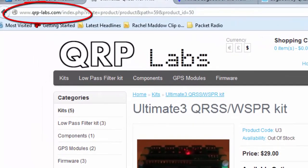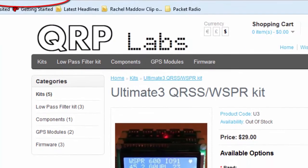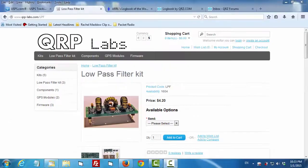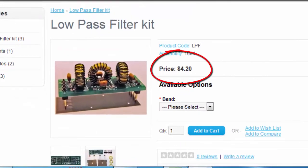You can find this kit at qrp-labs.com on the internet. As you can see right here, it's a pretty reasonable price for this kit. And the low-pass filter kits are very reasonably priced as well.